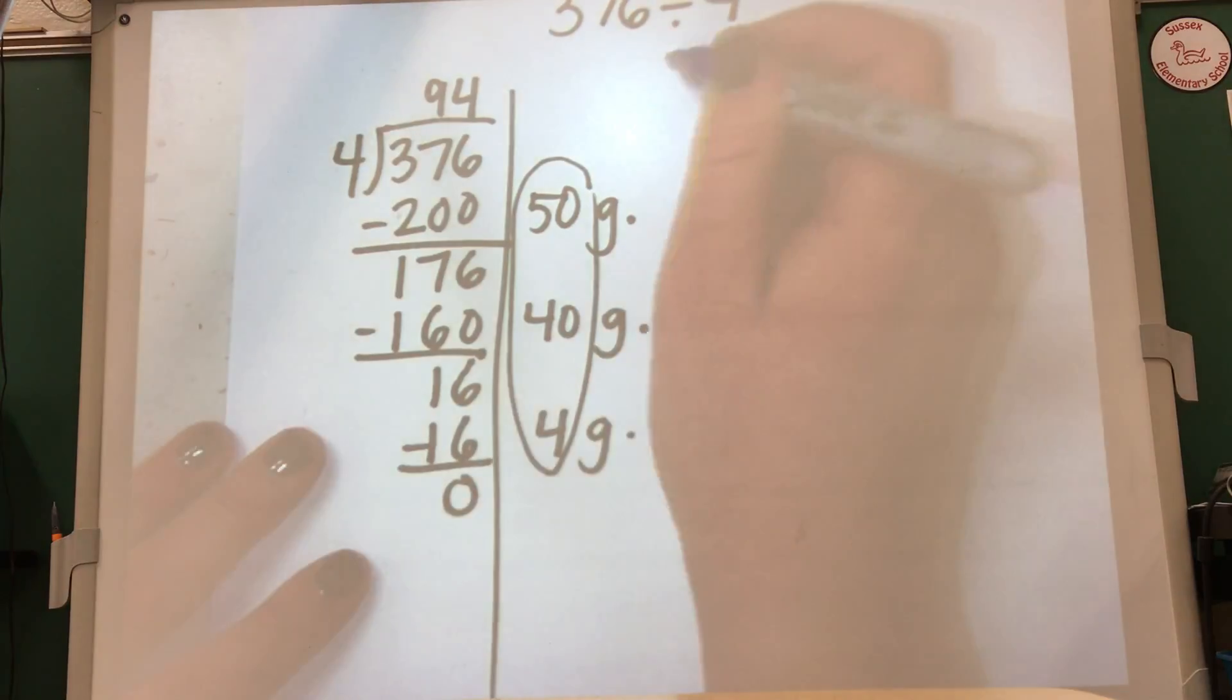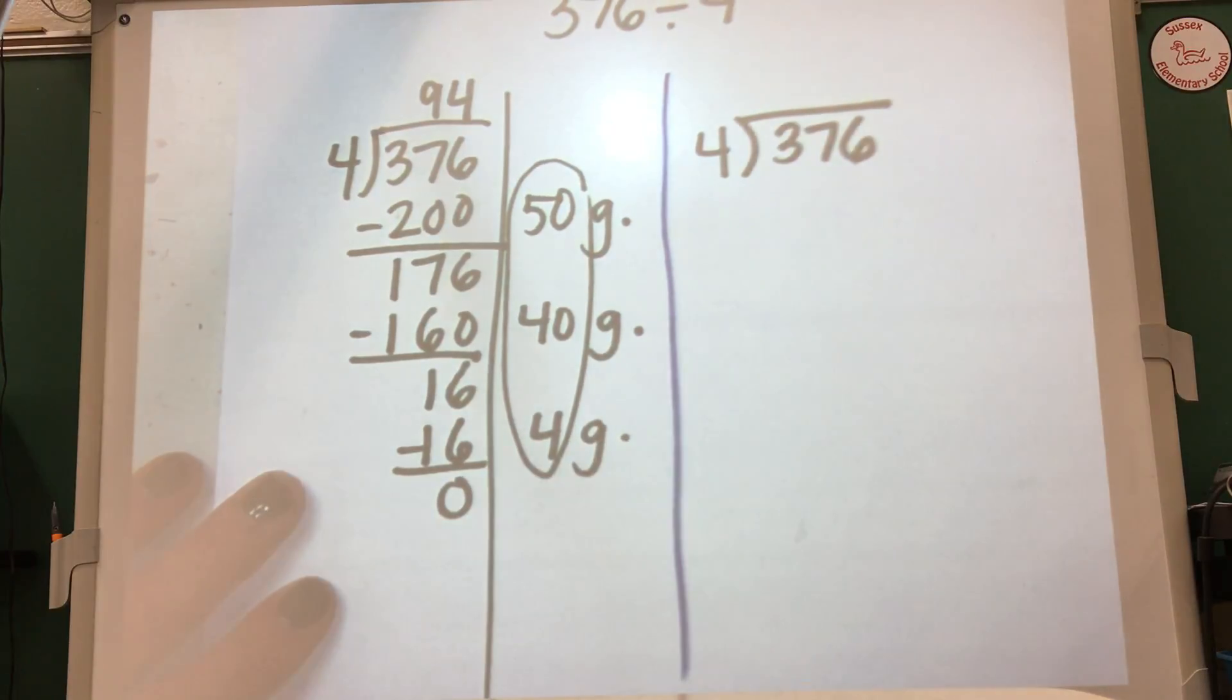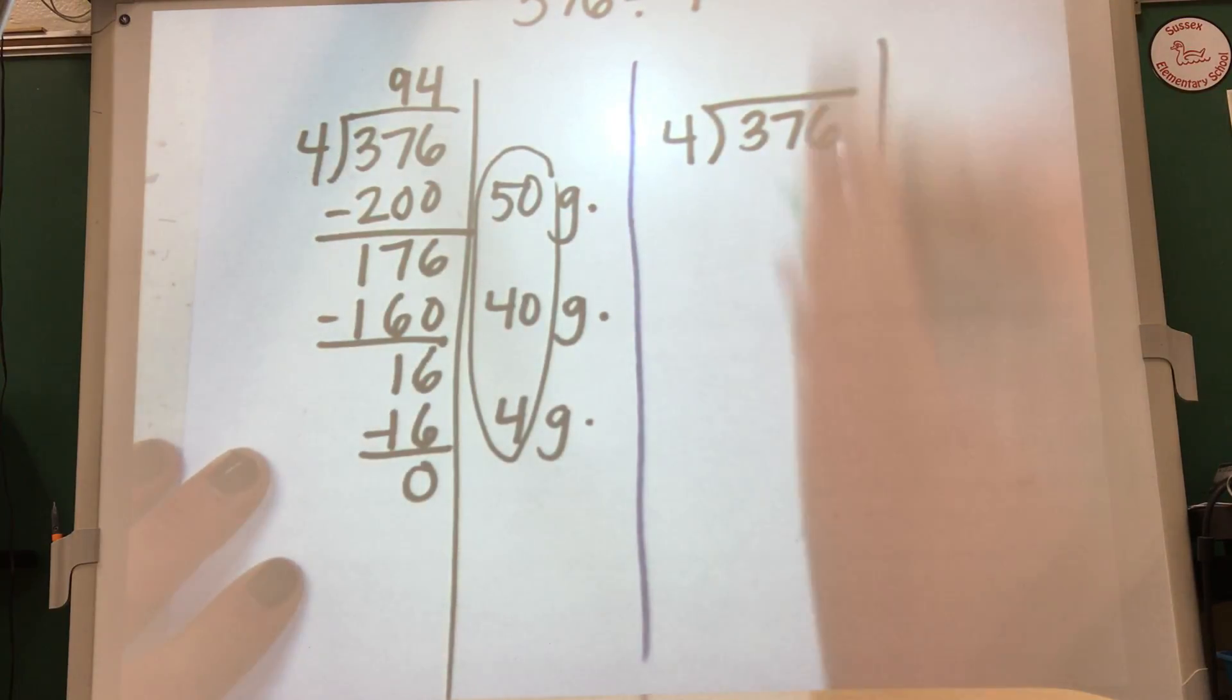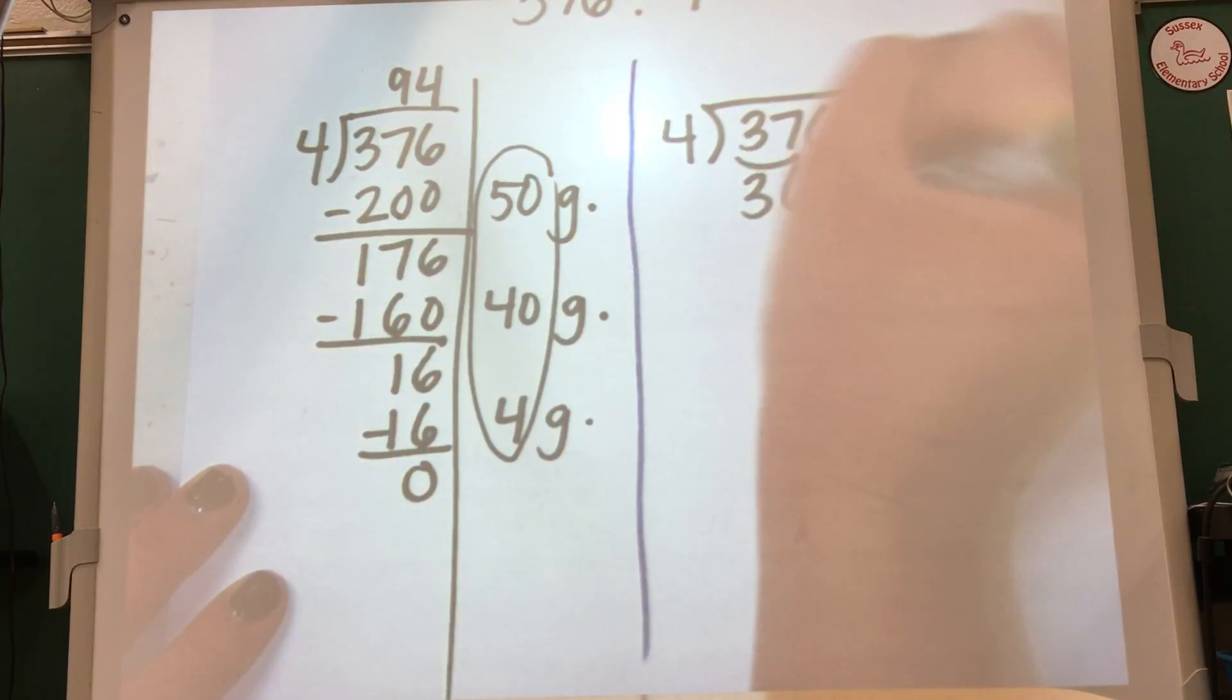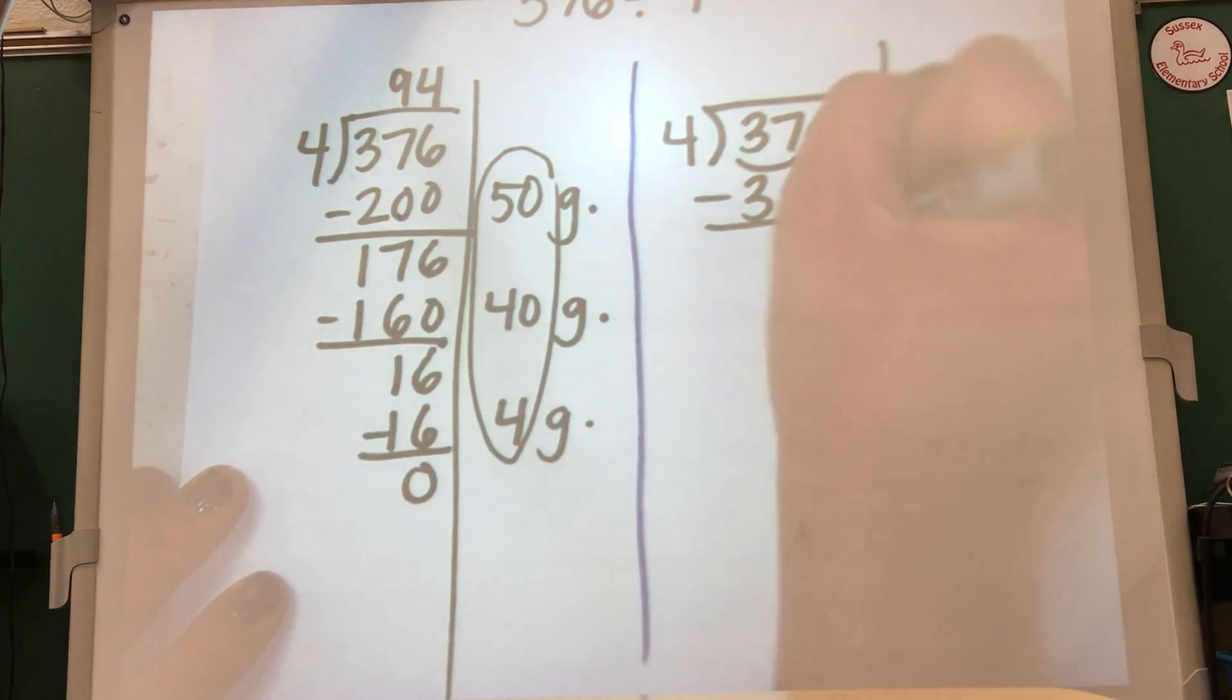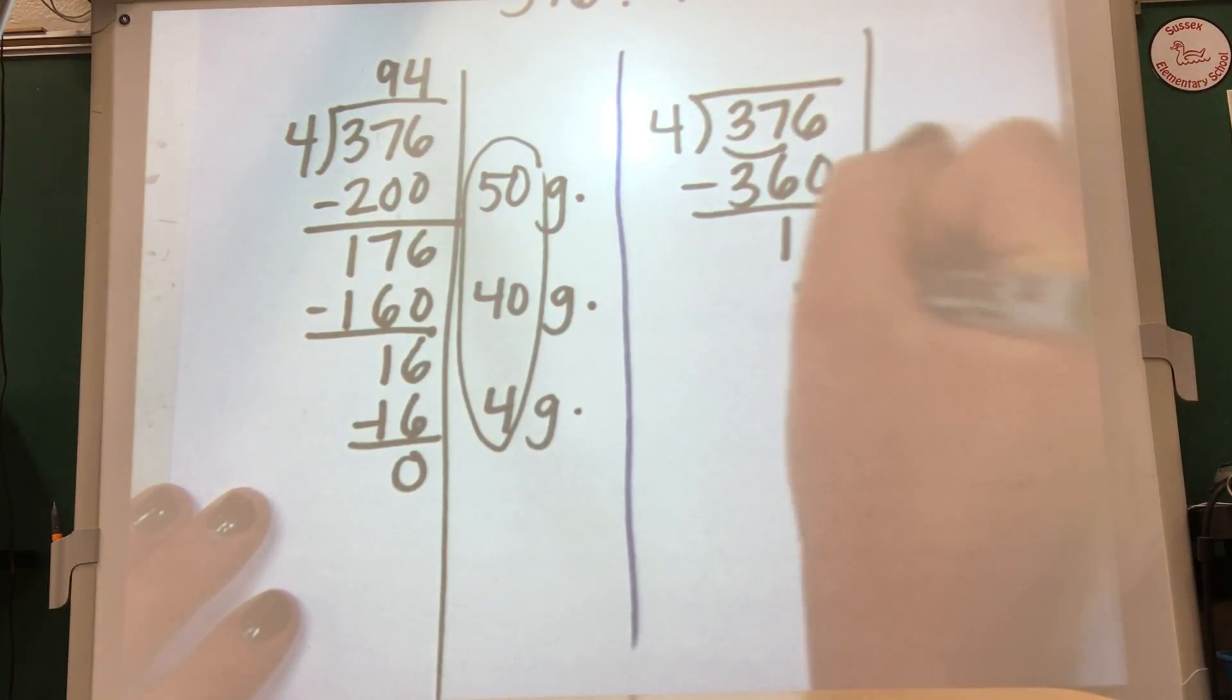Now a faster way to do this: if I do 376 divided by 4, if I see this 37 tens, if I know 4 times 9 is 36, then I know 4 times 90 is 360. Right there I'm only left with 16, and then I can finish quickly. 4 times 4 is 16, get down to 0. Well my answer is 94.